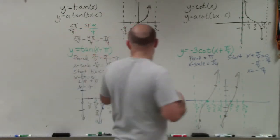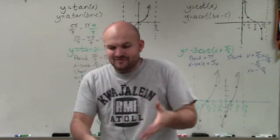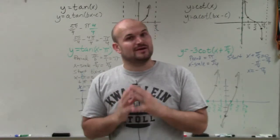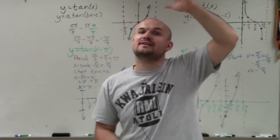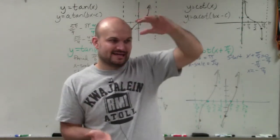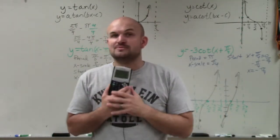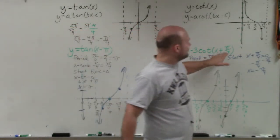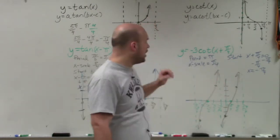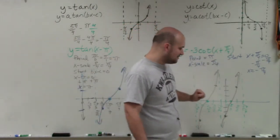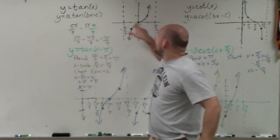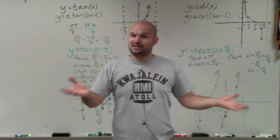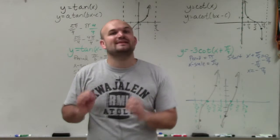The main important thing to understand is that a does not affect amplitude — we don't have an amplitude for cotangent and tangent. But if the absolute value of a is greater than 1, that vertically stretches; if less than 1, it vertically compresses; if it's negative, you reflect the graph. Always check your points with the calculator to make sure. And when you have a plus or minus inside the function, that shifts your graph left or right. Always go from the new starting point with your x scale. That is how you graph the tangent and cotangent function with a phase shift. Thanks.